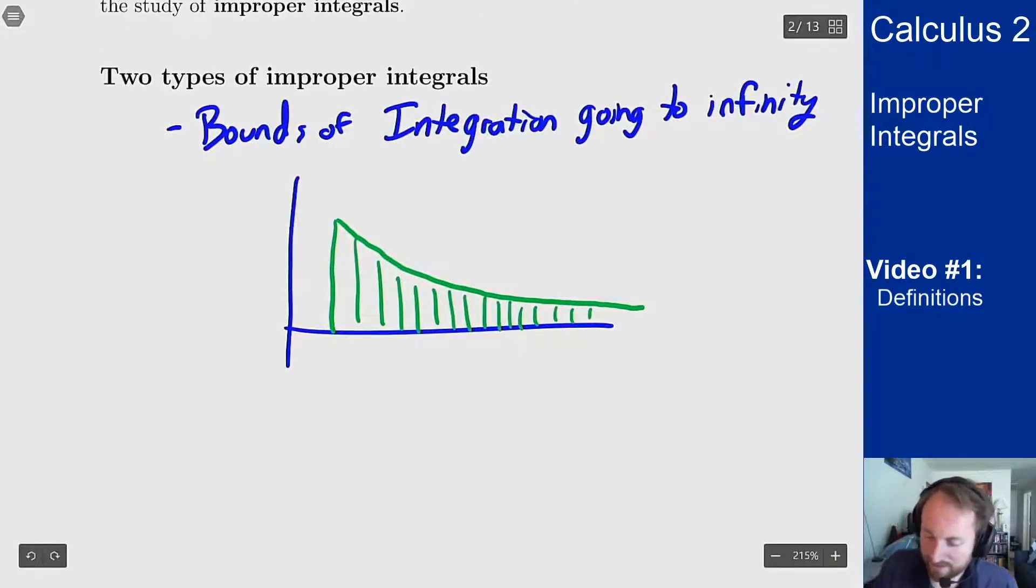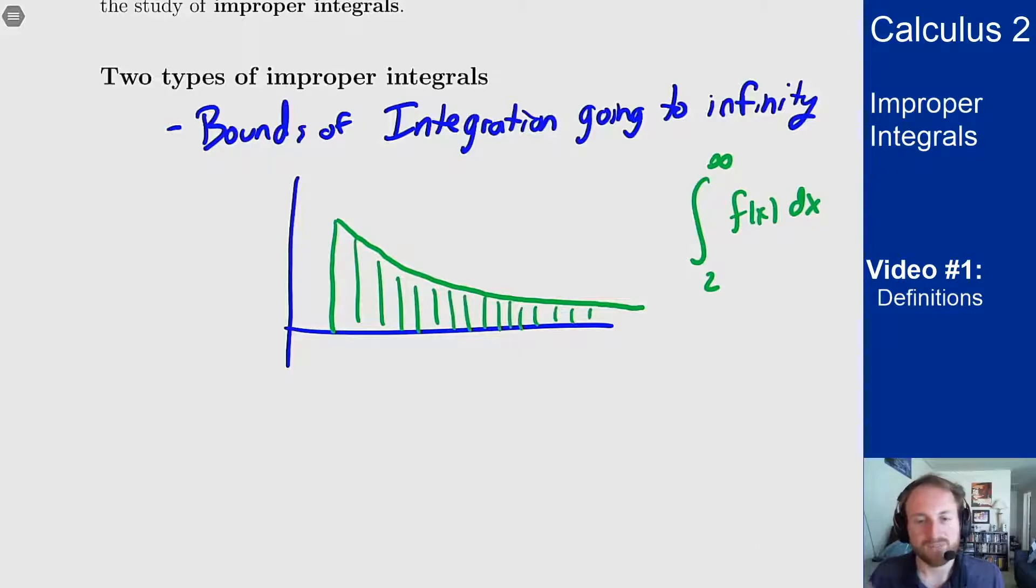In general you'd write these as something like the integral from two with an infinity as the upper limit. That's how we notate this situation of some function. That's one way for a region to go to infinity that we might be able to calculate via integral.